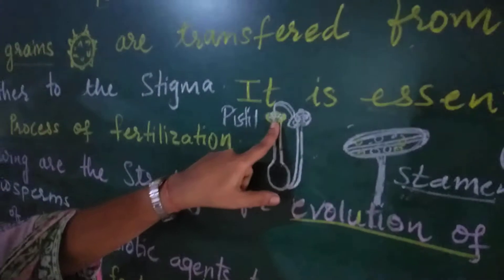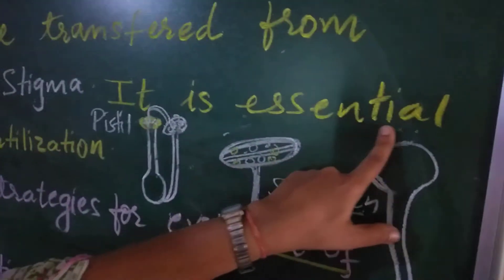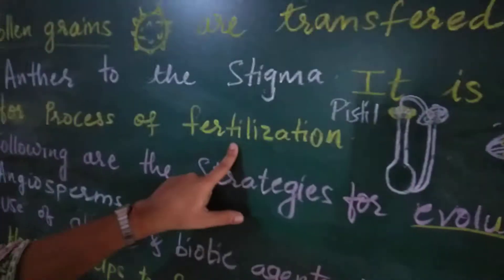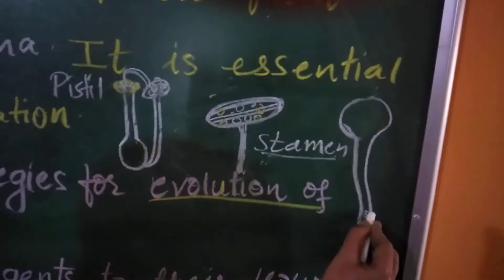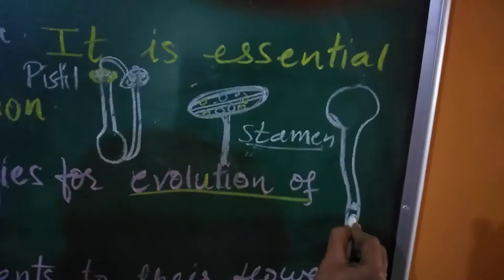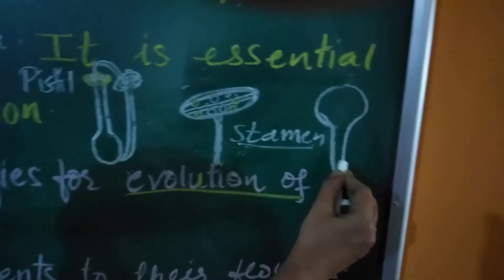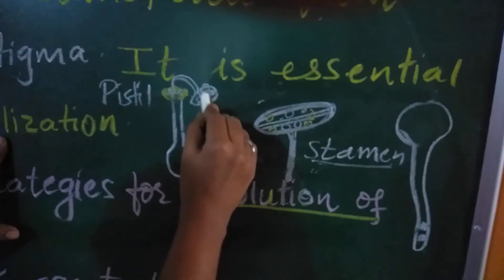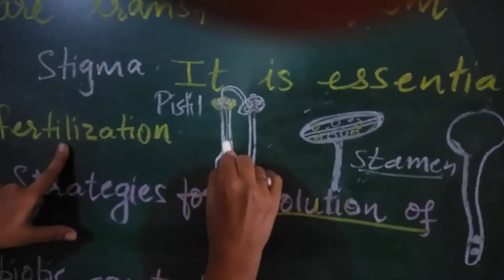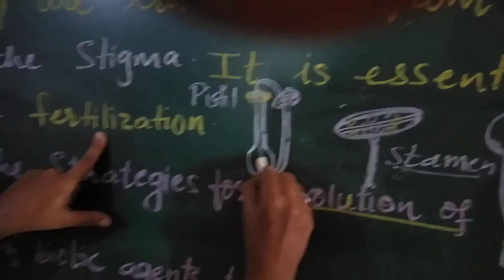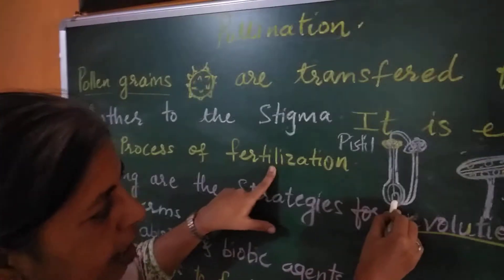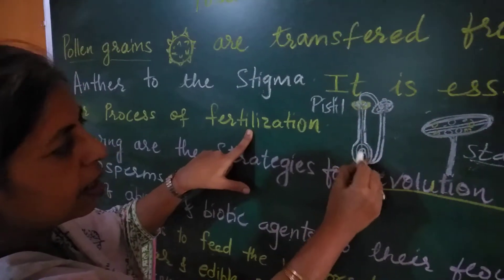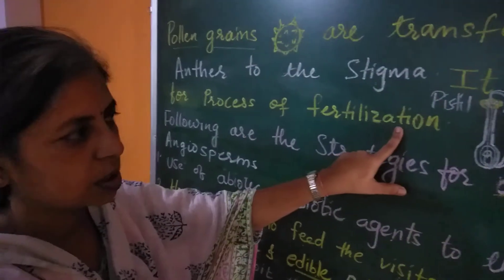Why is this process necessary or essential? It is essential for the process of fertilization. Fertilization is the process in which male gametes, produced inside the pollen grain, are carried towards the egg, which is produced inside the ovule. The male gamete then fuses with the egg, leading to fertilization.